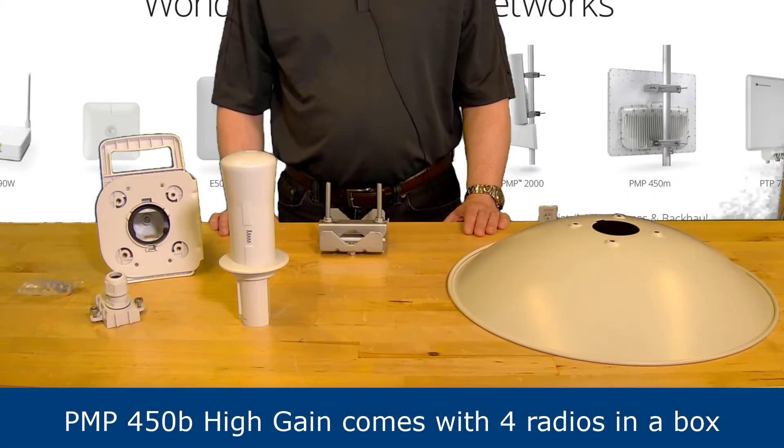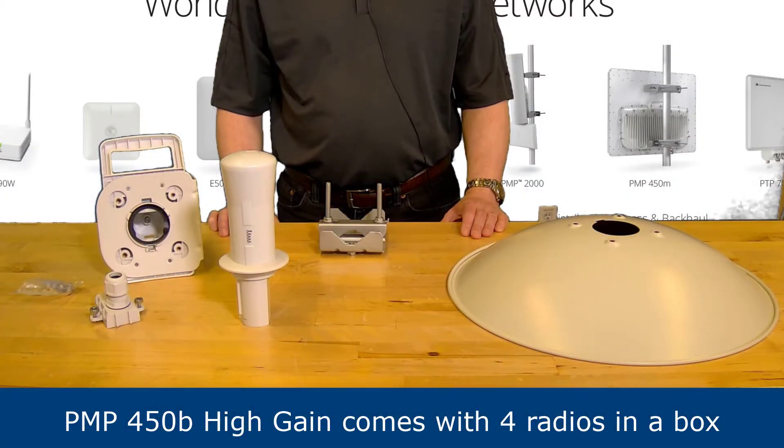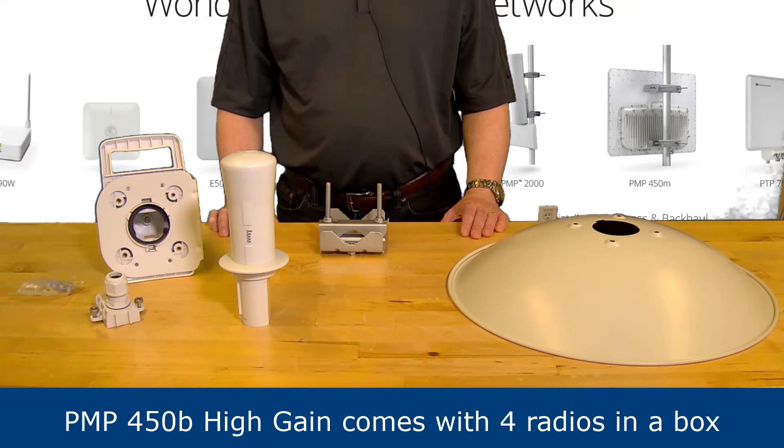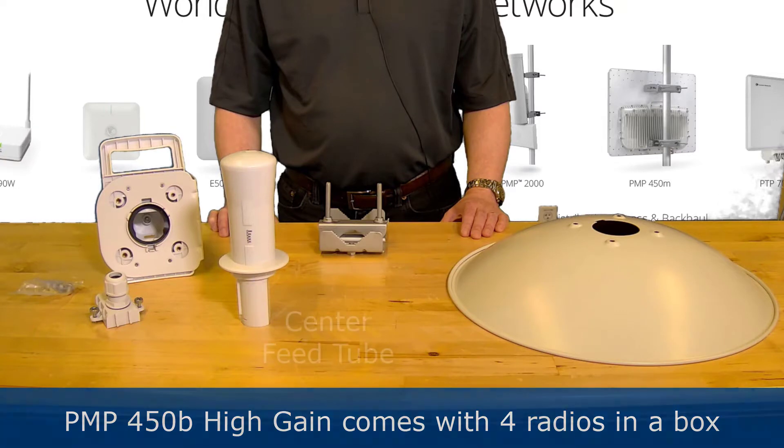The PMP 450B high gain subscriber unit is shipped as a four pack containing four individual radios in one box. Let's begin by looking at the components that come as part of the PMP 450B. The box contains one of the following for each radio.